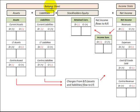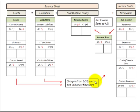We've got the balance sheet accounts here — the assets, the liabilities, and retained earnings as part of stockholders' equity — and then the income statement accounts, which would be the net income. During the year, we've got transactions in the assets and liabilities area and they're flowing in, with those charges being accumulated in the revenues and expenses accounts in the income statement.